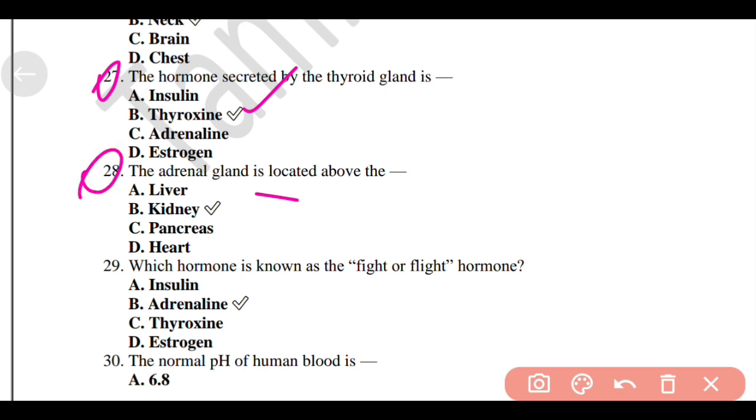The adrenal gland is located above the Option B, Kidney. Which hormone is known as the fight or flight hormone? Option B, Adrenaline.